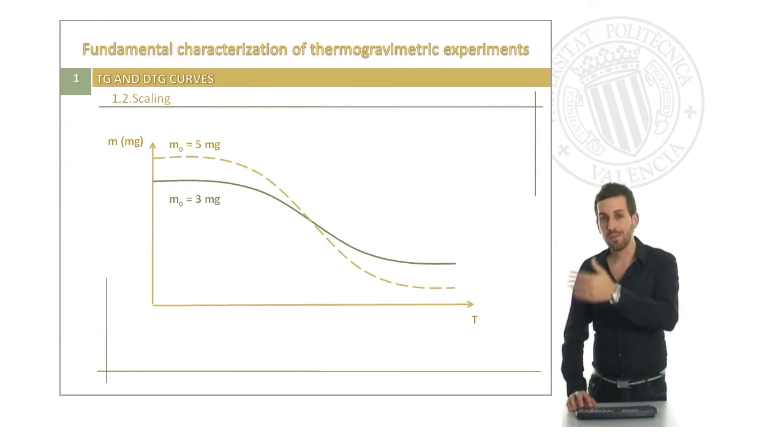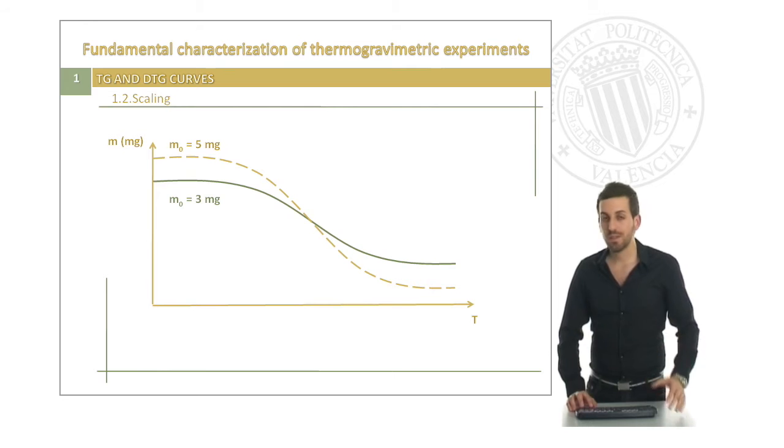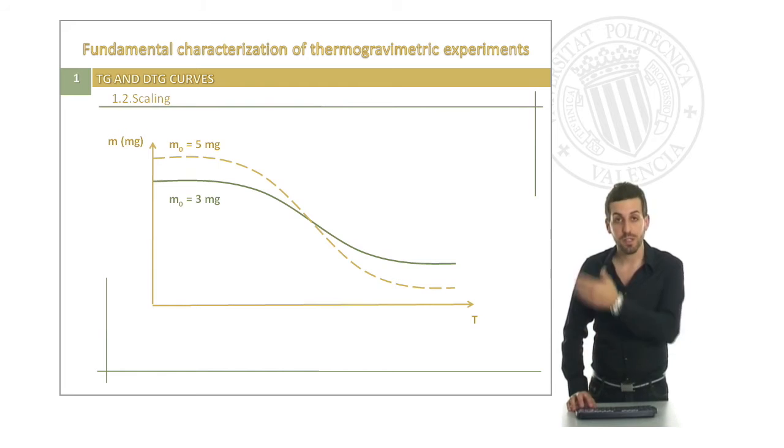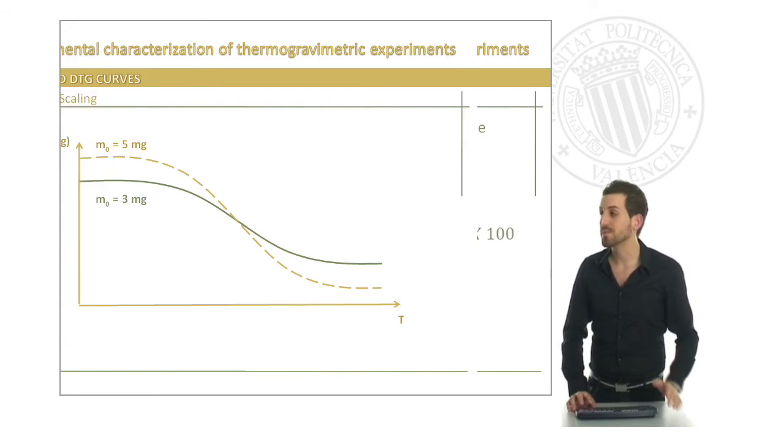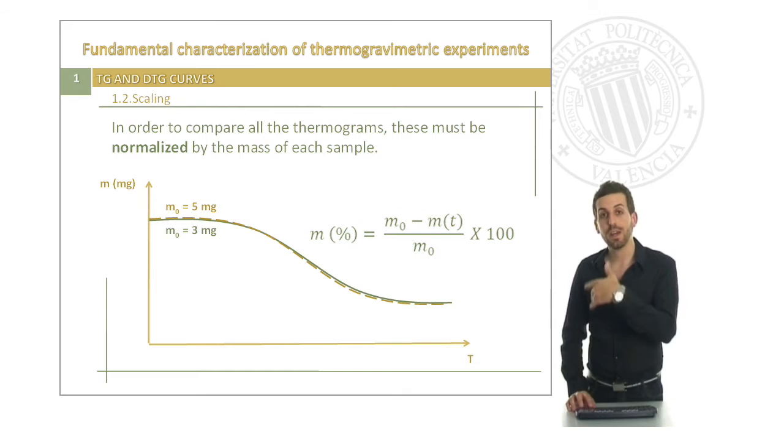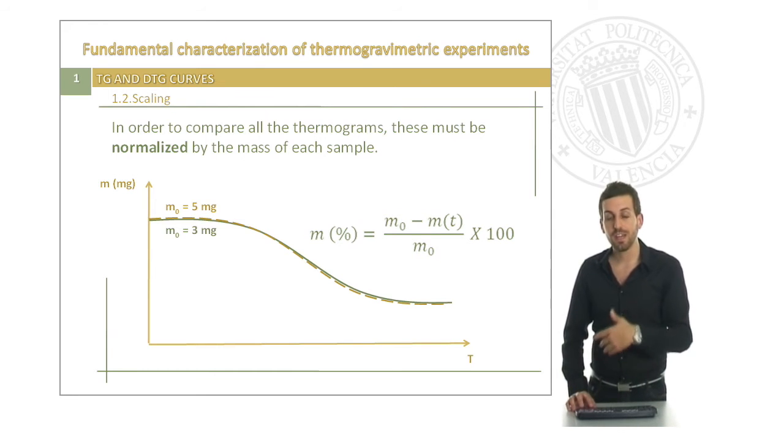Let's start playing with these TG curves. The first tip, the first advice that I can give you is that if you have different samples with different masses, don't try to relate them because you cannot distinguish between both samples. But if you scale them, you will be able to characterize and to relate and to find the different differences between both samples.